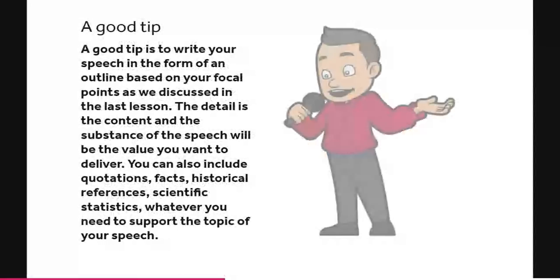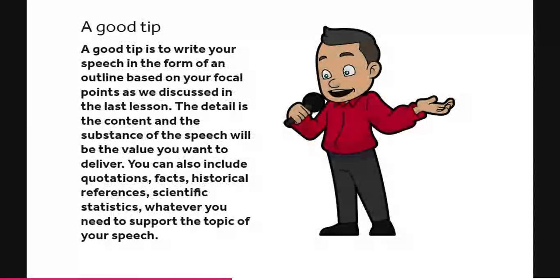A good tip is to write your speech in the form of an outline based on your focal point. As we discussed in the last lesson, the detail — the content and substance of the speech — will be the value you want to deliver. You can also include quotations, facts, historical references, scientific statistics, whatever you need to support the topic of your speech.